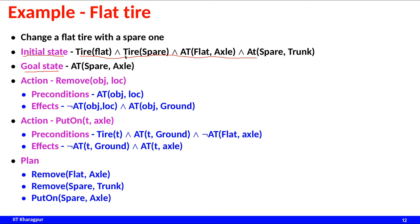Earlier we used to represent states in a custom manner depending on the problem. Here in the planning problem we have some kind of action that can change the state, similar to state transition rules. We call these moves mostly as actions. Each action comes with preconditions and effects. The precondition describes under what circumstances I can apply a certain action — if the precondition is true, I can apply the corresponding action.